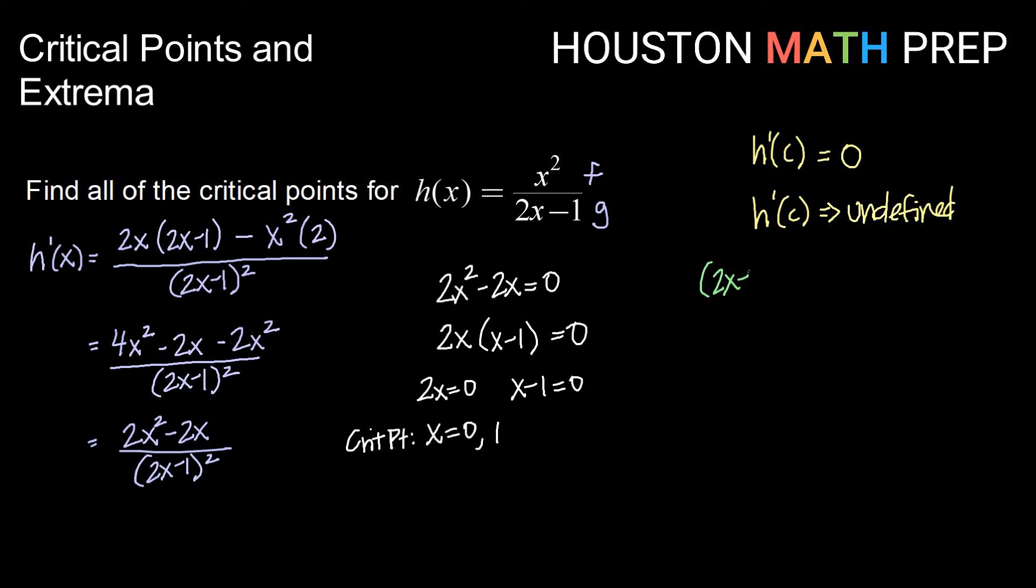So taking 2x minus 1 squared and setting that equal to 0, I can take the square root of both sides. That will give me 2x minus 1 equals 0. Then 2x equals 1.